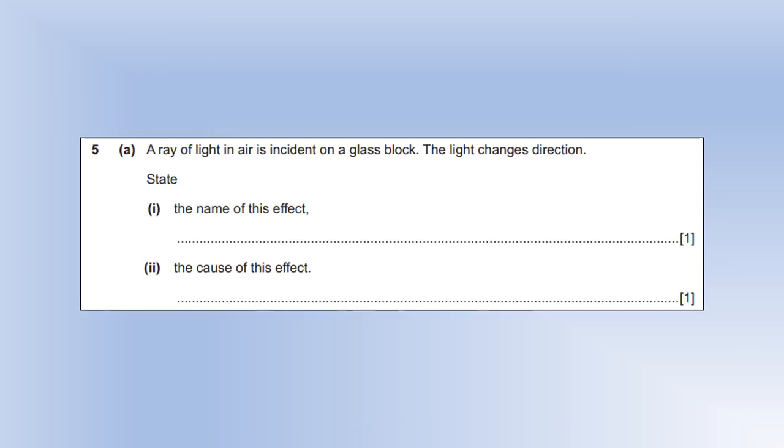So moving on to some optics. A ray of light in air is incident on a glass block and it changes direction. What is the name of that effect? Well, the one we're probably talking about is refraction. We could probably also talk about reflection here as well, but the one they're probably looking for is refraction here. And the cause of that effect is the wave changing speed as it crosses the boundary. And it's the speed change that causes the refraction process. And that speed change is caused by density changes.